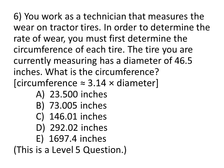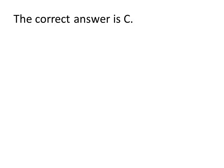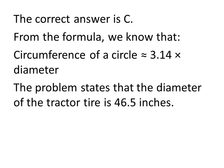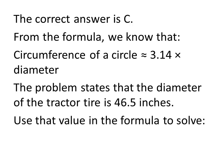Here is question 6. The correct answer is C. From the formula provided, we know that the circumference of a circle is roughly equal to 3.14 times the diameter. The problem states that the diameter of the tractor tire is 46.5 inches. So, we use that value in the formula to solve. 3.14 times the diameter of 46.5 inches gives us a circumference of 146.01 inches.